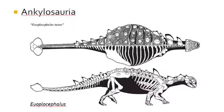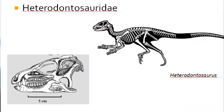The next group is the Heterodontosaurids, the different toothed lizards, and we will discuss those in this video, since some researchers place them near the base of the Ornithischian tree of dinosaurs.